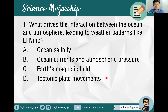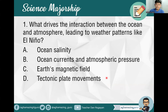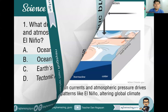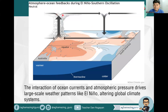What drives the interaction between the ocean and atmosphere, leading to weather patterns like El Niño? A, ocean salinity. B, ocean currents and atmospheric pressure. C, ocean magnetic field. Or D, tectonic plate movements. The answer is letter B — ocean currents and atmospheric pressure. This actually drives the interaction between the ocean and atmosphere. The interaction of ocean currents and atmospheric pressure drives large-scale weather patterns like El Niño or the Southern Oscillation, altering the global climate system.